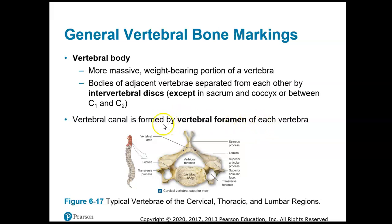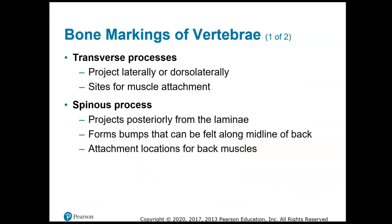On this page, the vertebral foramen — a foramen is just a large hole through bone. This is a typical cervical vertebra. The vertebral foramen, through any of the vertebrae — cervical, thoracic, or lumbar — is the place where the spinal cord resides. A nerve or blood vessels or whatever would travel through a foramen.